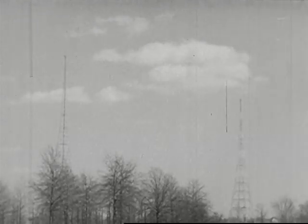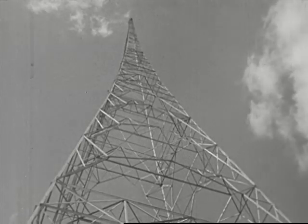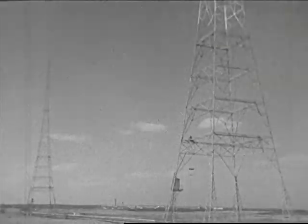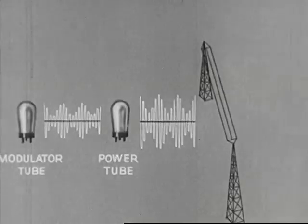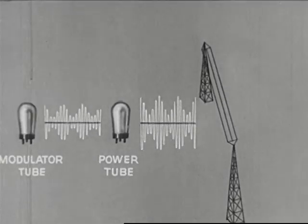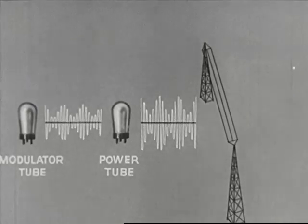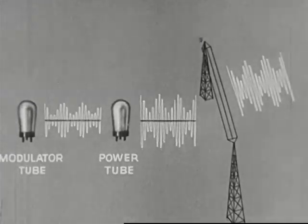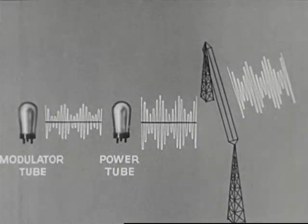This antenna consists of two steel towers and a central wire supported by a cross cable between them. Radio waves are sent out in all directions. Thus from the power tube, the modulated radio waves go to the antenna. The radio messages leave the antenna as electromagnetic waves and travel out into space with the speed of light.